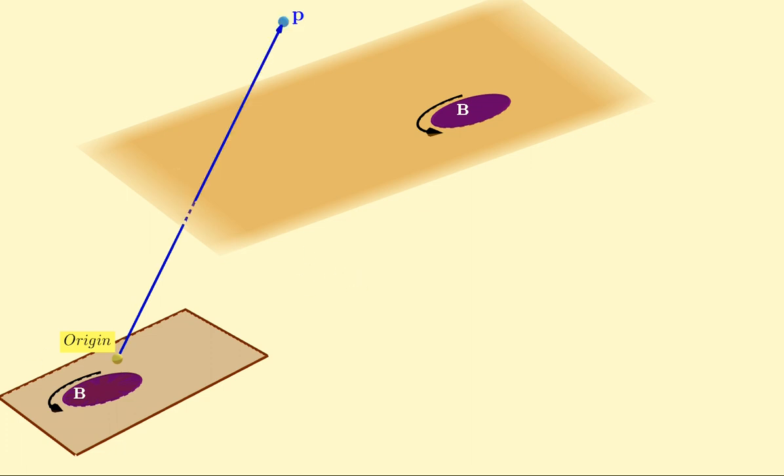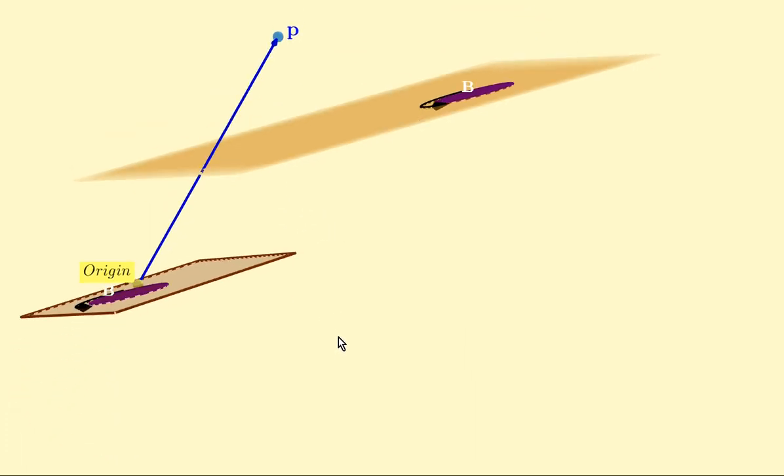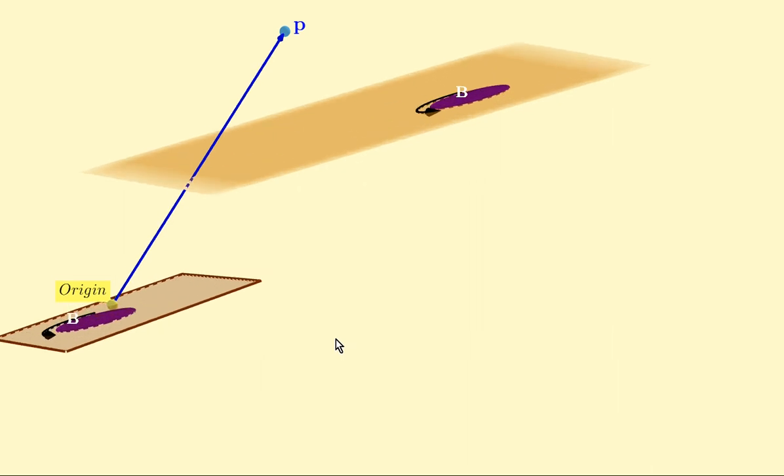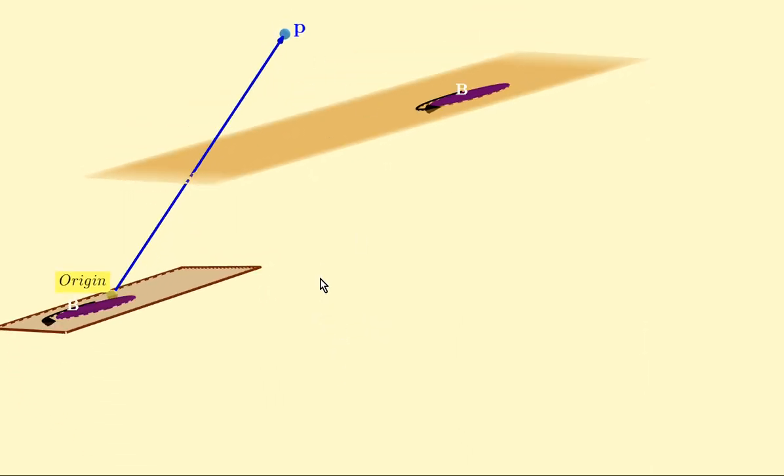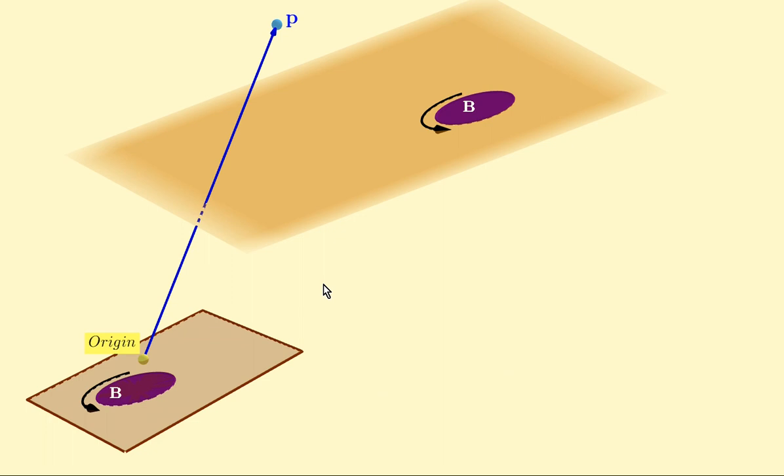So that's our first case. The second case is when we want the plane to be parallel to a given bivector but below or above or to the side at some distance from that point. So those are two cases.